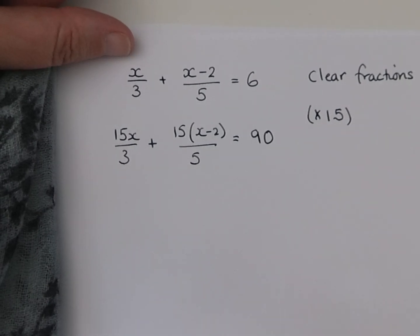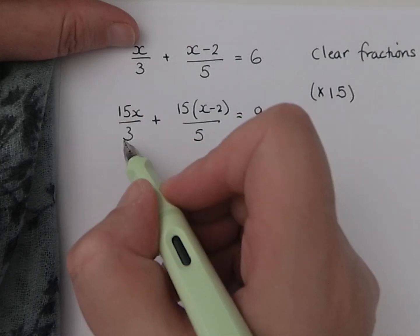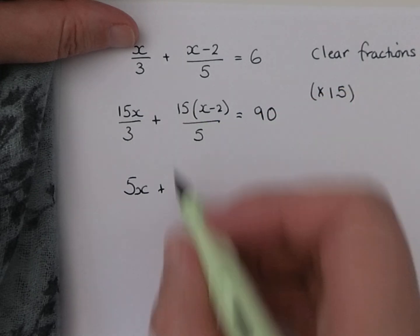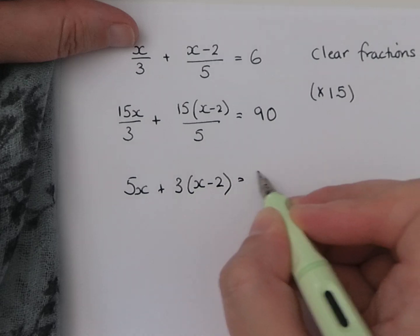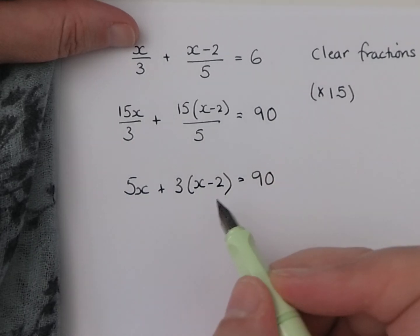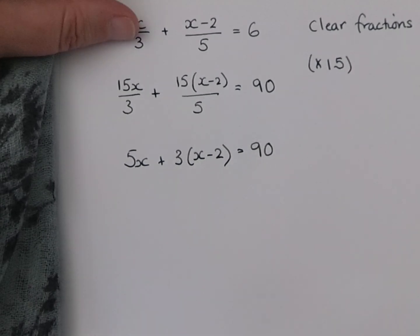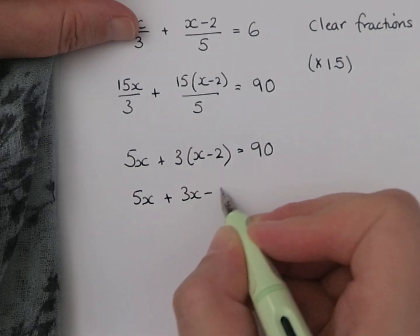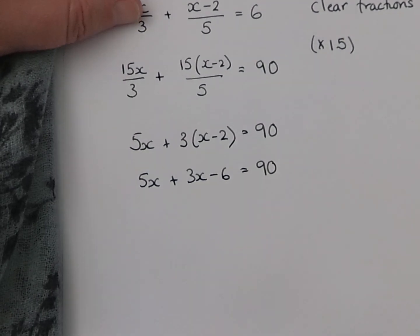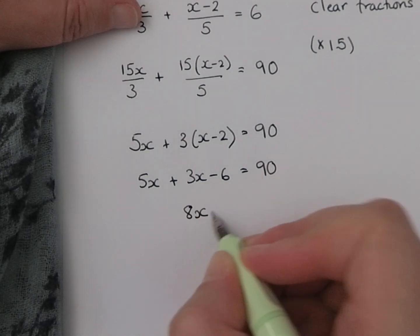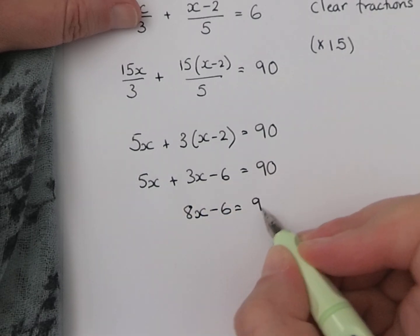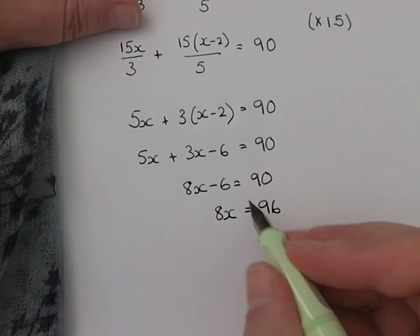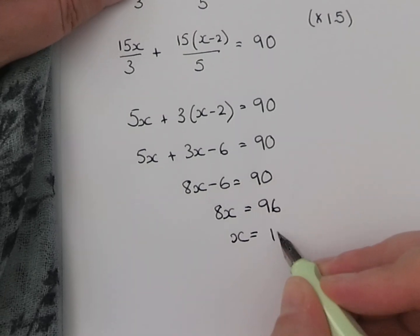Now we can cancel out the fractions. So 15 divided by 3 is 5, and 15 divided by 5 is 3. So now we have a linear equation to solve, which should be a little bit more simple. We've got some brackets. Let's expand those out. 5x plus 3x minus 6 equals 90. Let's collect like terms. 8x minus 6 equals 90. 8x equals 96. Divide by 8, x equals 12.